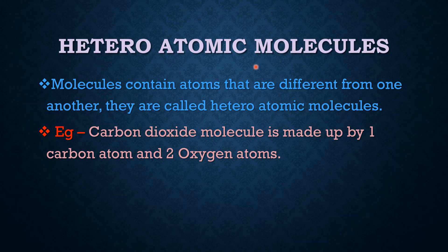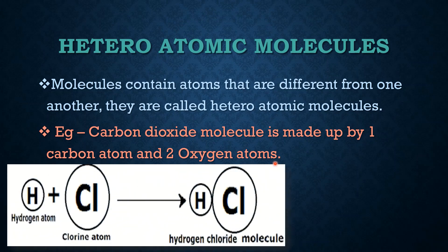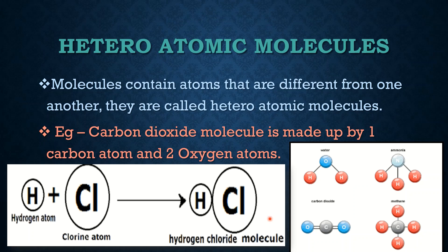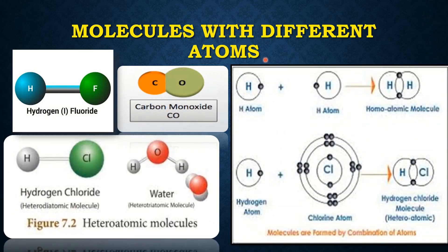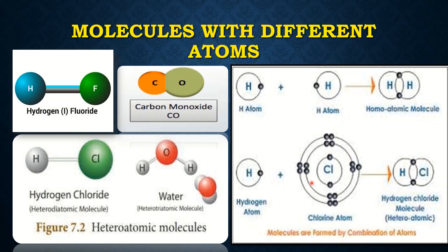Now we discuss heteroatomic molecules. Molecules that contain atoms different from one another are called heteroatomic molecules. For example, a carbon dioxide molecule is made up of one carbon atom and two oxygen atoms. Similarly, combining hydrogen and chlorine atoms creates hydrogen chloride, which is a heteroatomic molecule. Two hydrogen atoms combining form a homoatomic molecule, while hydrogen and chlorine together form hydrogen chloride, a heteroatomic molecule.